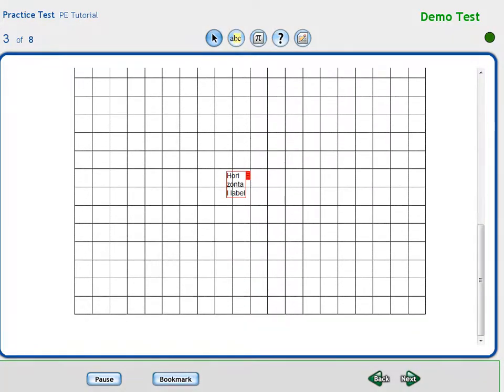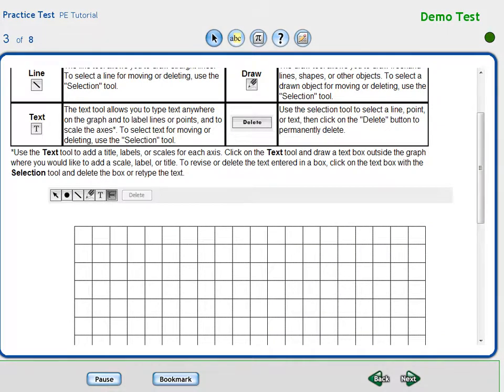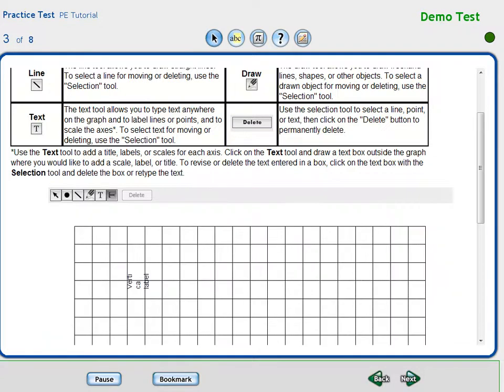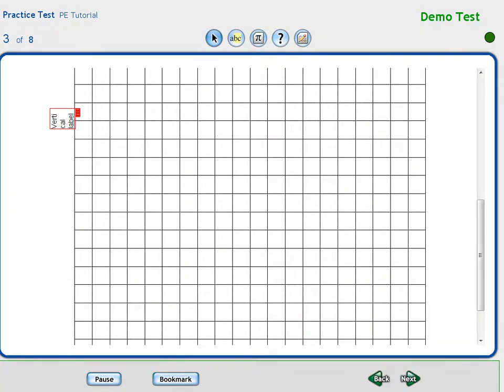The text tools will be used to label the axes. In this tutorial, the horizontal axis will be labeled horizontal axis. The vertical label will be labeled vertical axis. The user will need to label these based on the information that will be displayed on his or her graph. The user can use the selection tool to move the labels into the correct position.